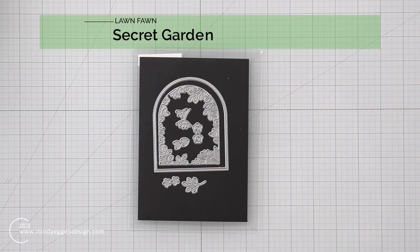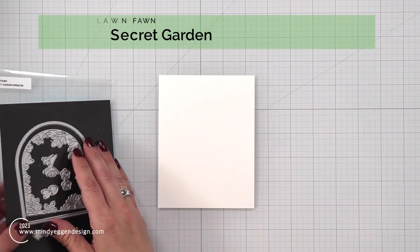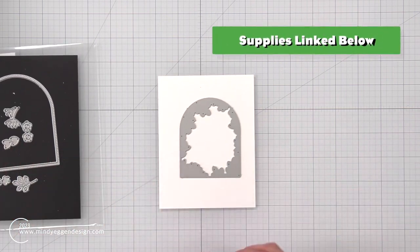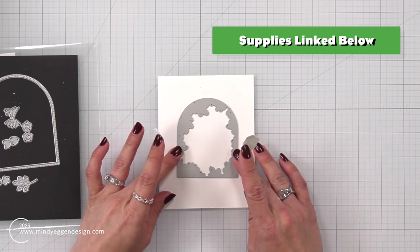So this is a look at the Secret Garden window die, and I'm only going to be using that inside piece. I really do like that arch to go around it, but for right now I just want to create the window with all of that die cut detail in there.